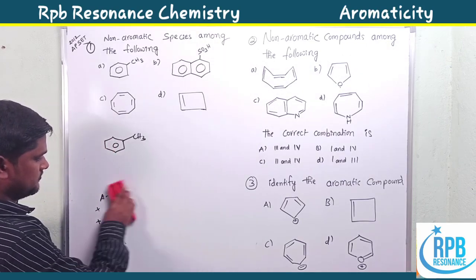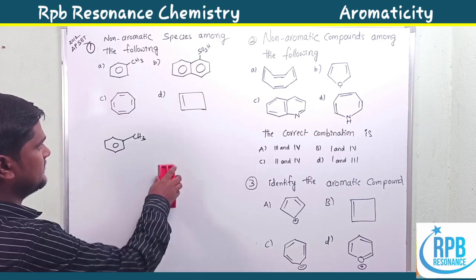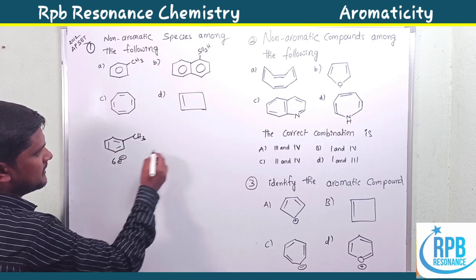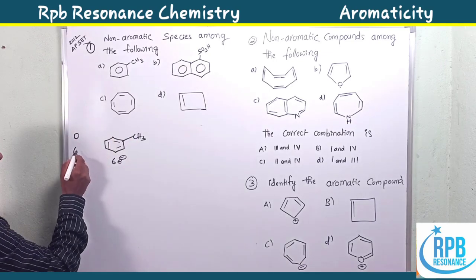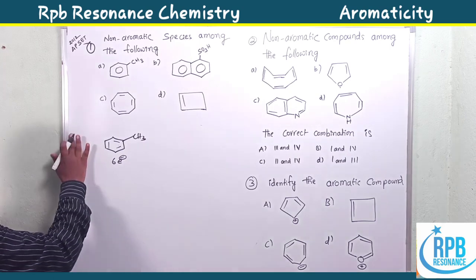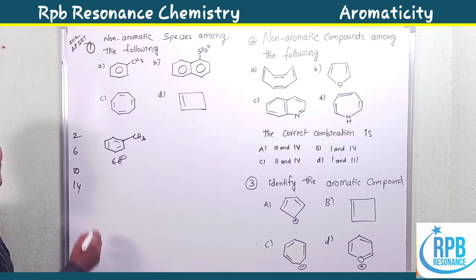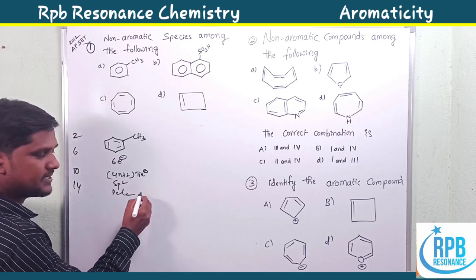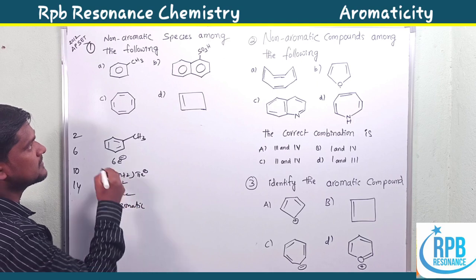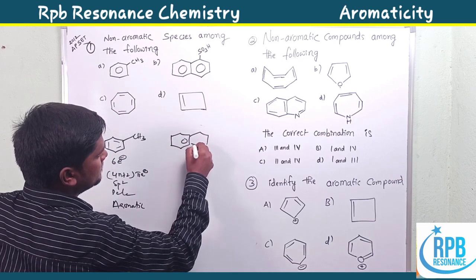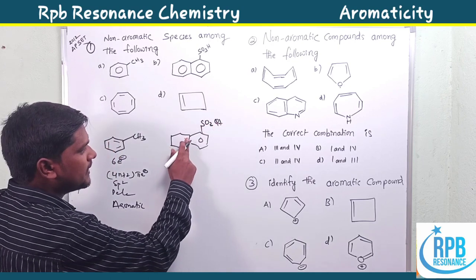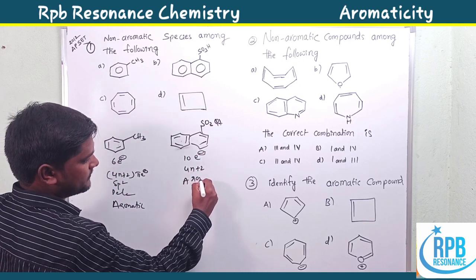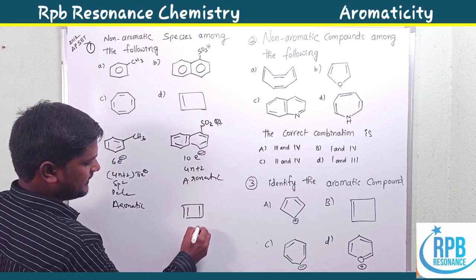Now looking at the options: the first example has three double bonds — that is six pi electrons, which falls under the 4n+2 system (n=1). All are sp2 with full delocalization, so it is aromatic. The second example is naphthalene with five double bonds — ten pi electrons, also satisfying 4n+2 — so it is also aromatic.